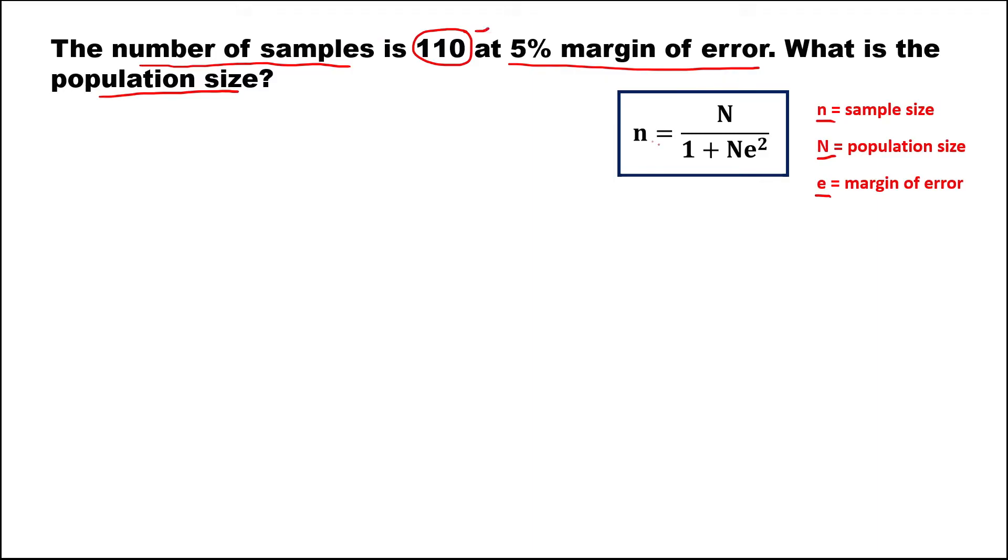From the number of samples, that's 110, so this is 110 equals N over 1 plus N times the margin of error, that's 5% in decimal. This is 0.05, so times 0.05, then quantity to the power 2.